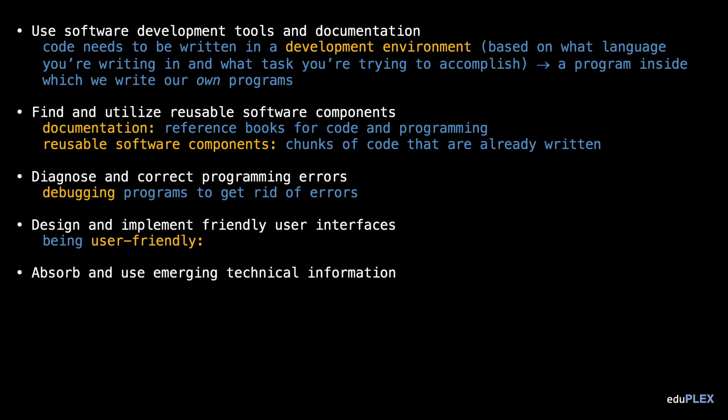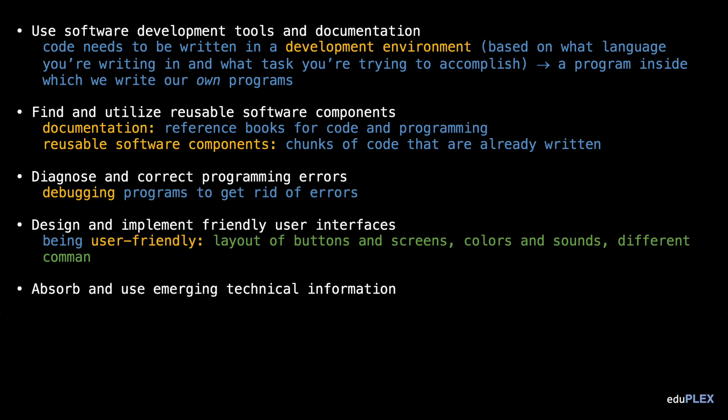Software engineers have to create user interfaces that seem so natural and easy to use every time we use these programs. This includes things like the layout of buttons and screens, the colors and sounds, the different commands, and just the overall look and feel of the program in general.